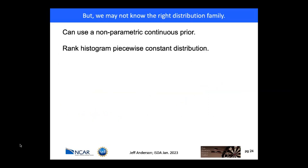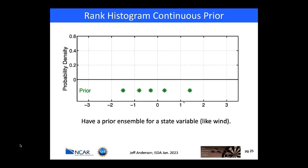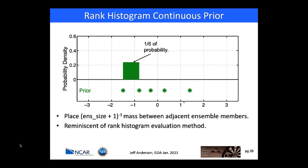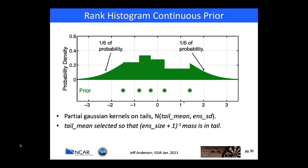There's still a pretty serious problem: it may be very difficult to know the right distribution family. Is a gamma really appropriate for a bounded quantity? Is a beta good for sea ice? I'll now extend this method using a non-parametric continuous prior — a rank histogram prior — so I don't have to worry about that. For an ensemble with five members, the rank histogram continuous prior puts one-sixth of the probability uniformly distributed between each pair of ensemble members, and one-sixth on each tail in the shape of a half-normal, with the mean selected so that one-sixth of the probability lies in the tail. This gives a continuous rank histogram distribution.